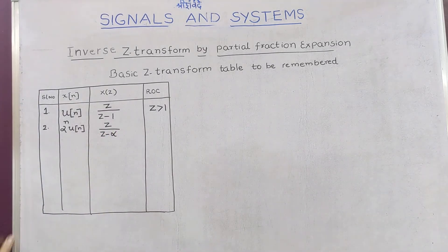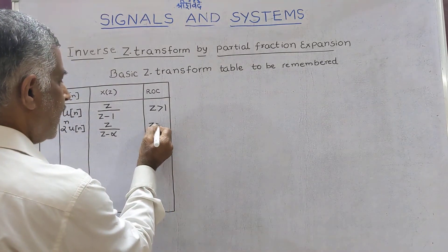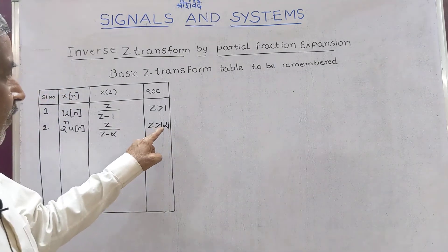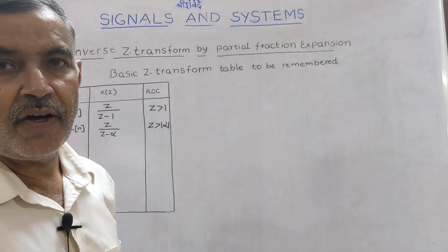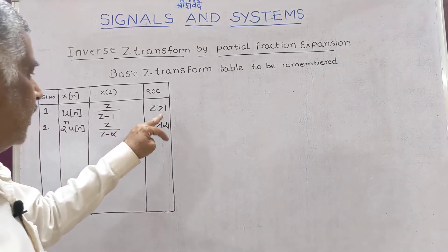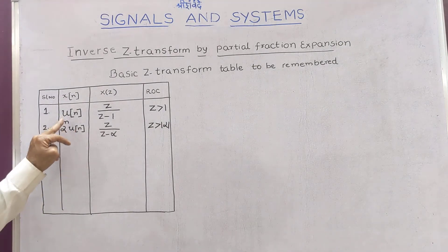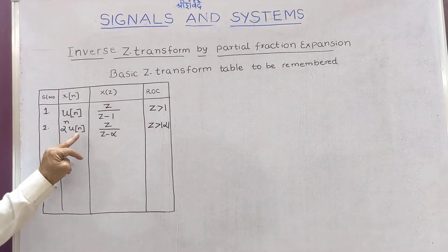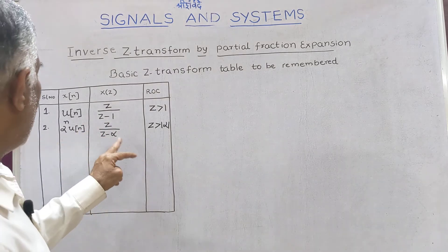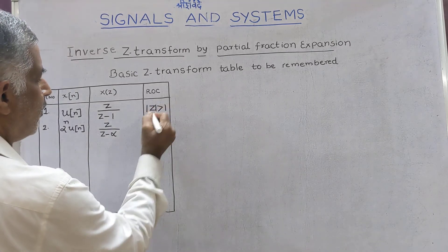So α^n · u[n] has Z transform Z over Z minus α, with ROC |Z| greater than |α|. The reason for writing this as |α| is that if alpha is positive or negative, it should be taken with the mod sign so the sign doesn't count.